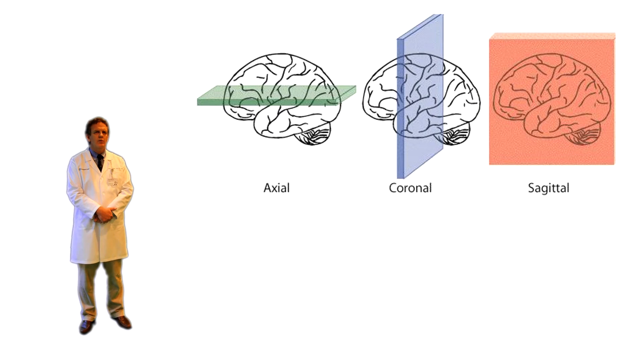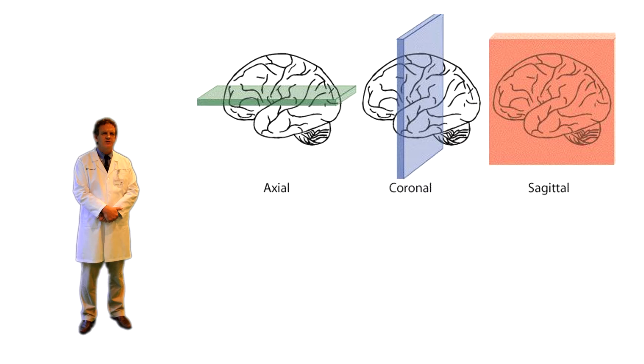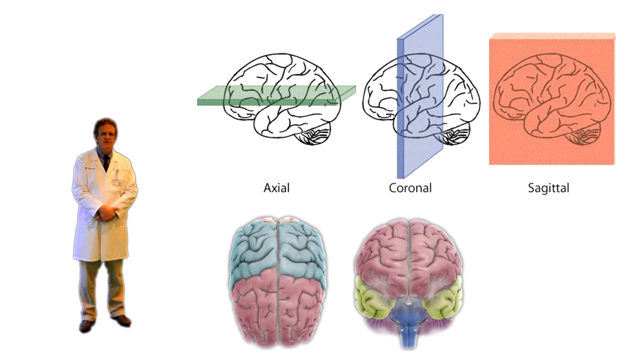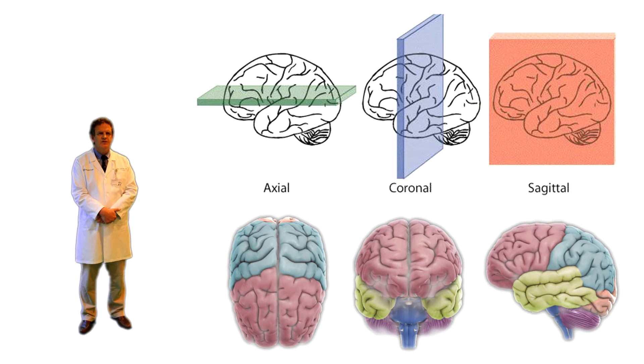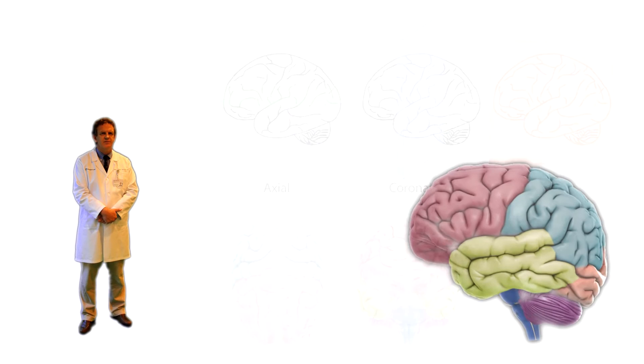Firstly, when looking at images of the brain, there are three primary viewpoints: coronal, axial, and sagittal. We will mostly be looking at sagittal images of the brain in this video.